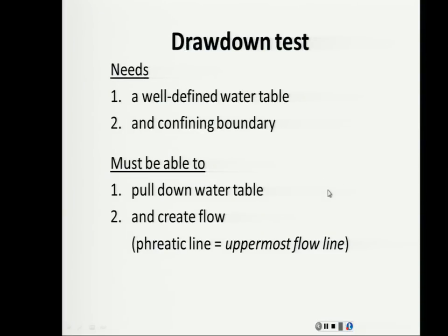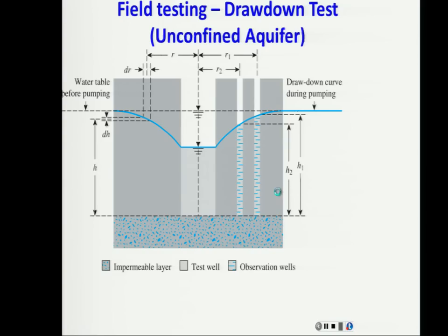To finish today's lecture: when conducting a drawdown test, you need a well-defined water table, at least one confining boundary, and the ability to pump water at a constant flow rate. Next class, we'll go through the derivation and do examples using the drawdown test for both unconfined and confined aquifers.